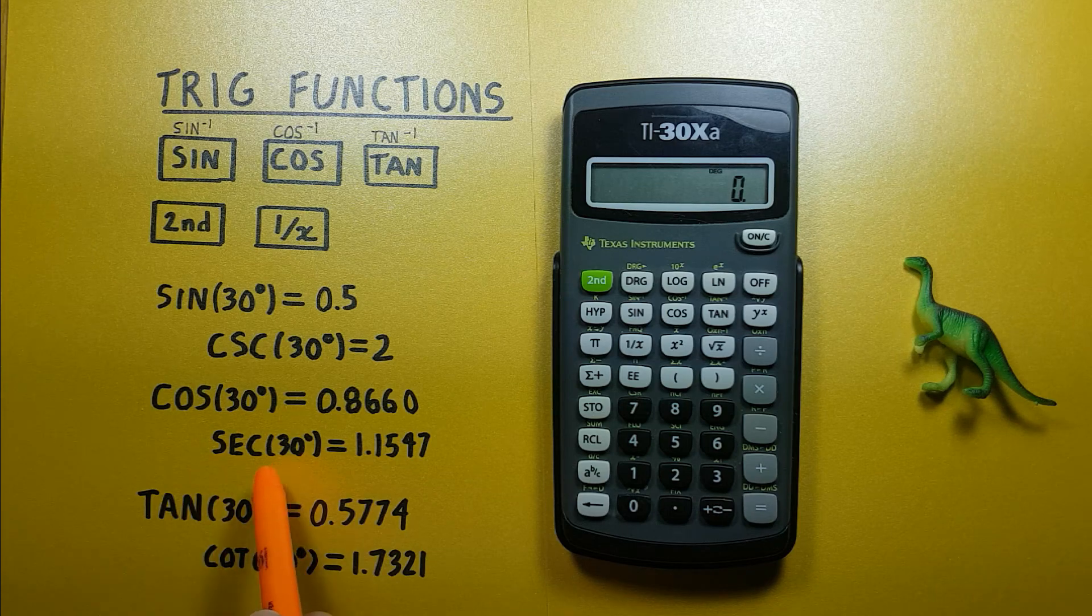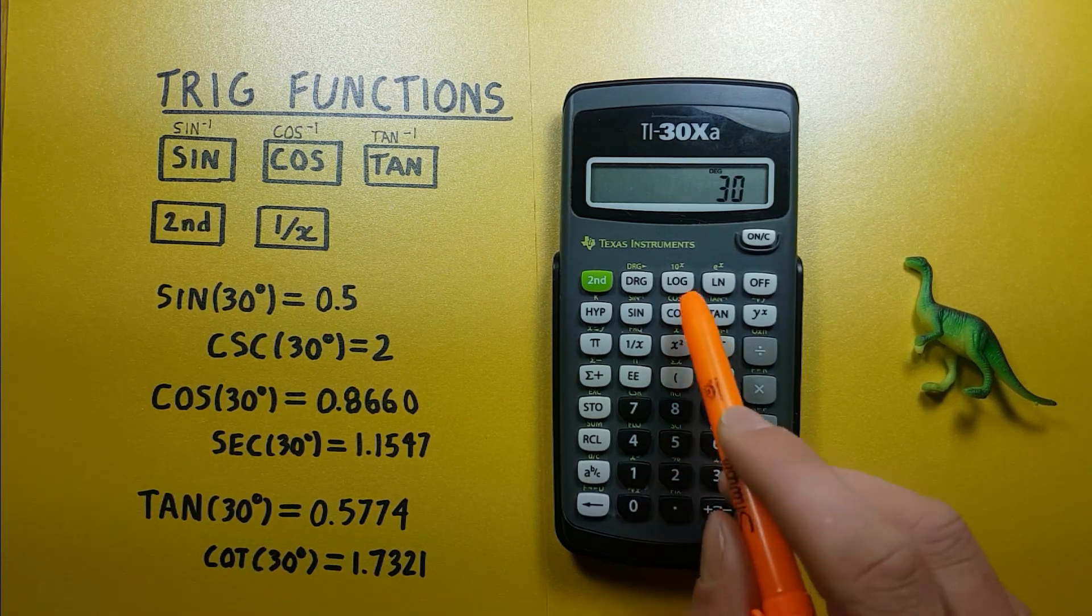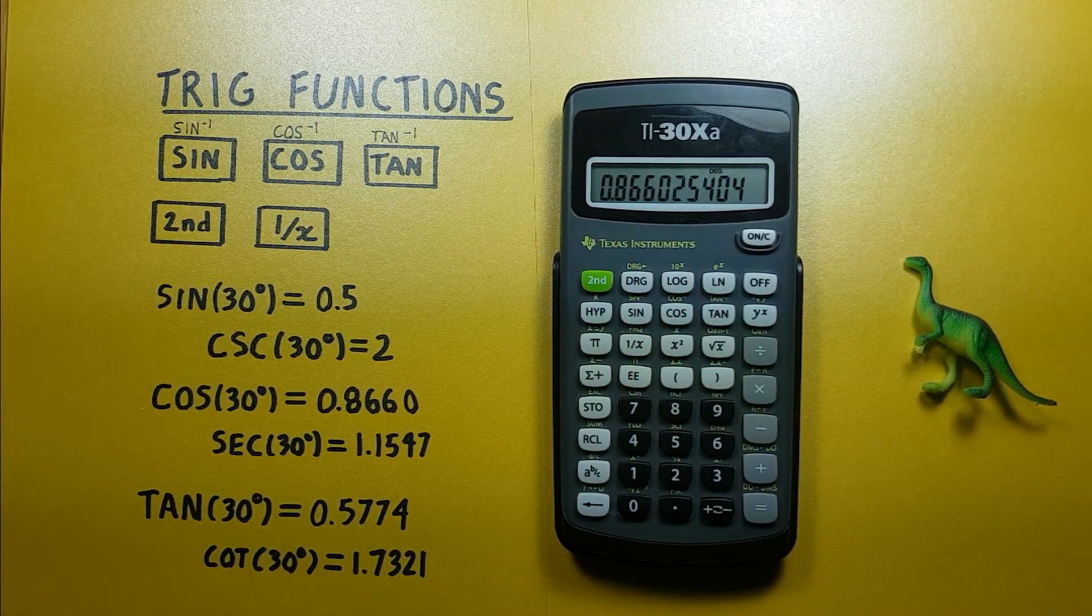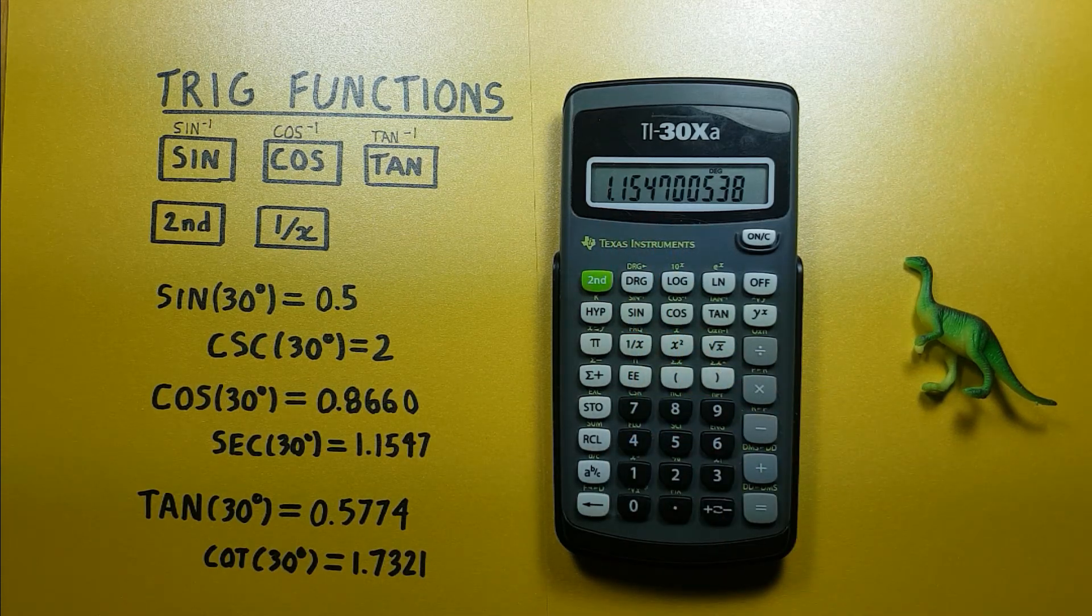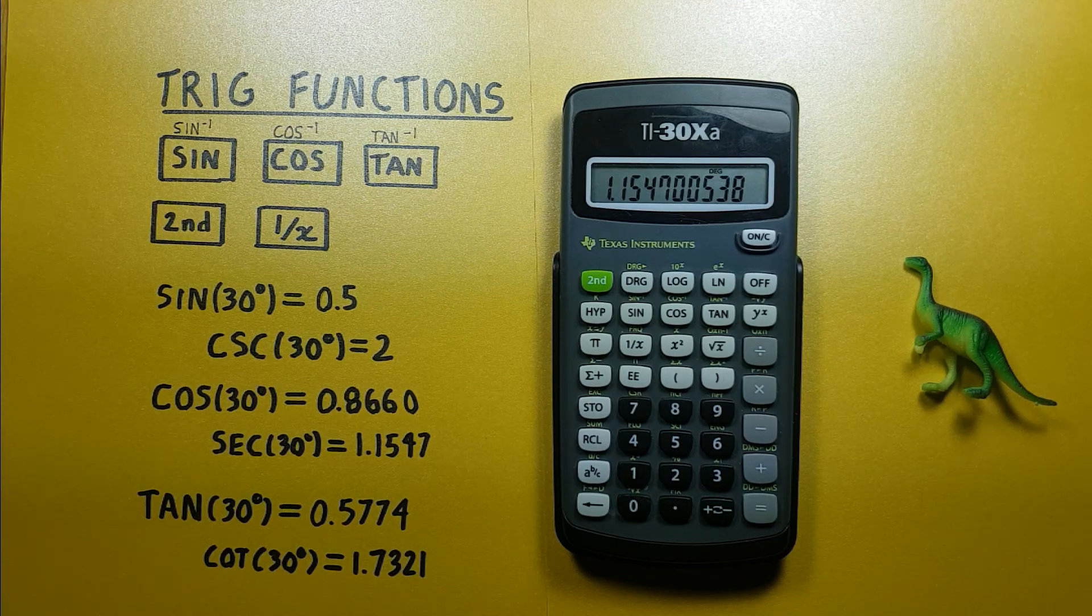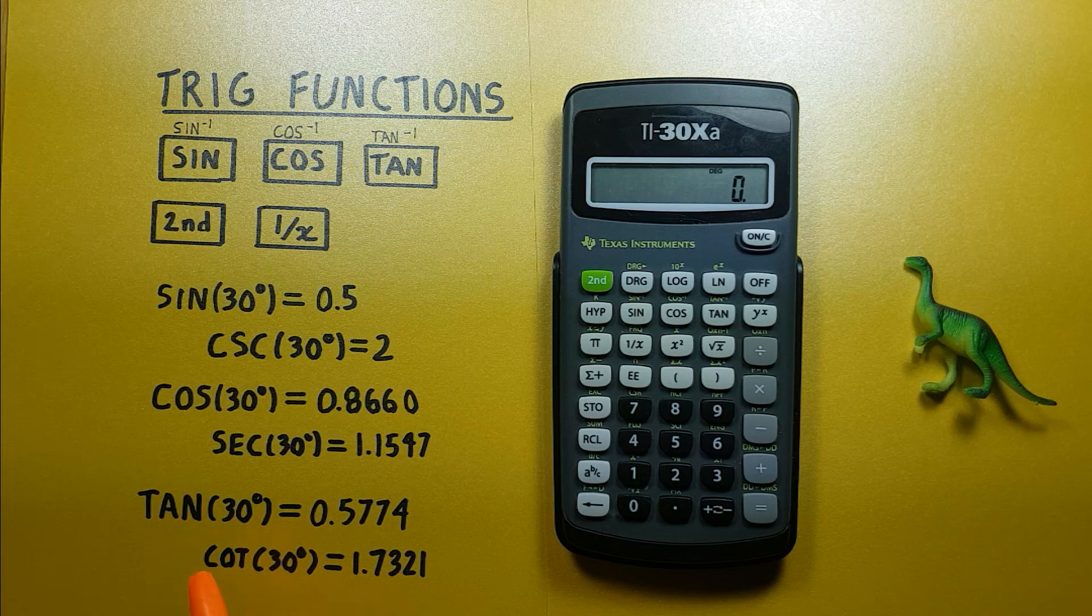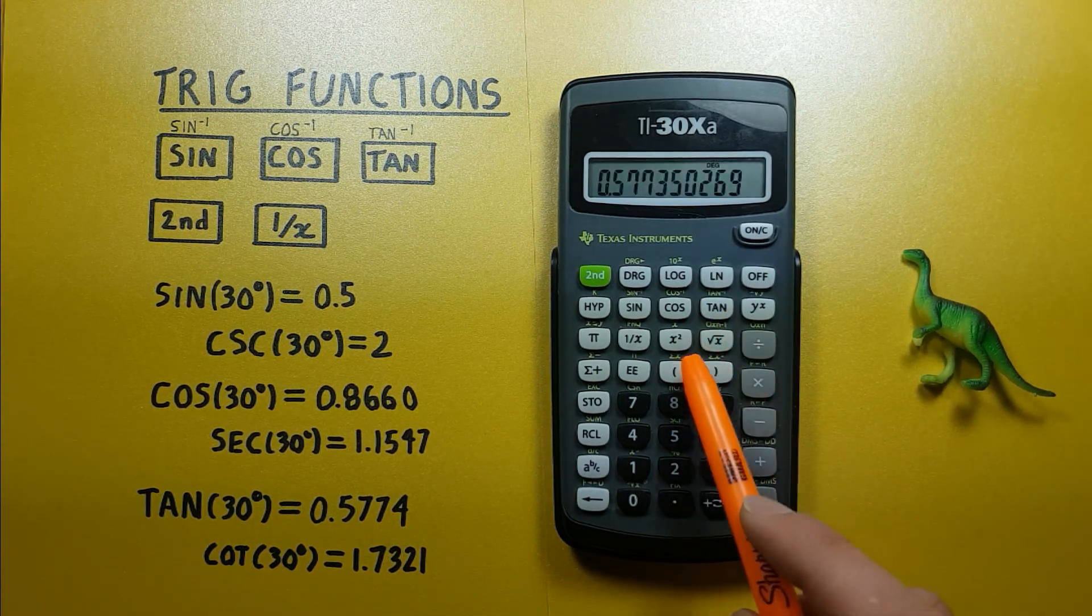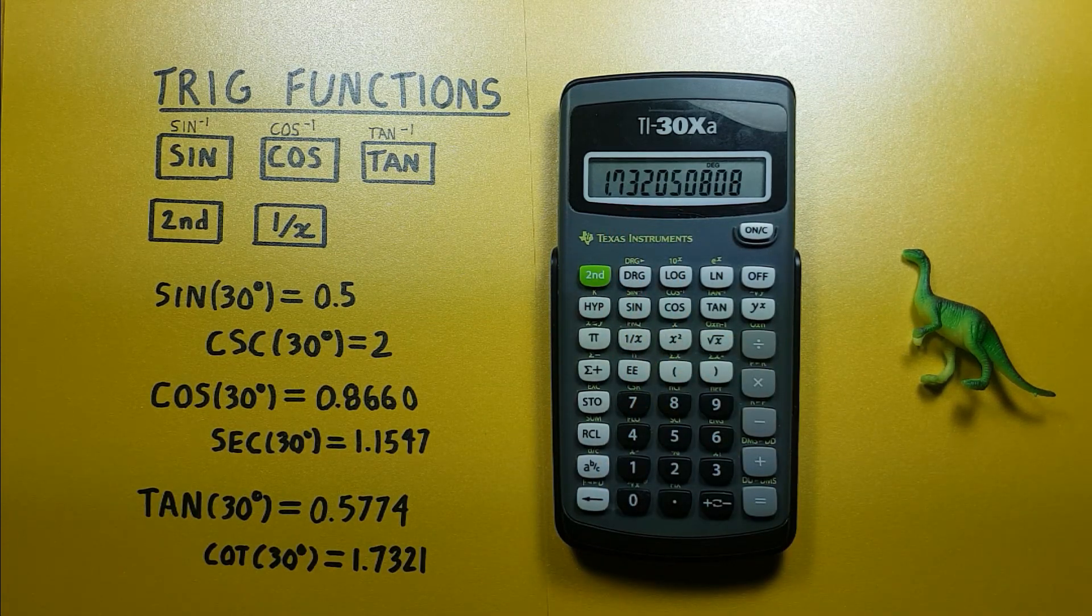For secant we do the same but with cos, so we go 30, cos, 0.8660 like before, and then inverse that to get secant of 30 degrees equal to 1.1547. For cotangent we use tan, so 30, tan, and inverse that to get 1.7321.